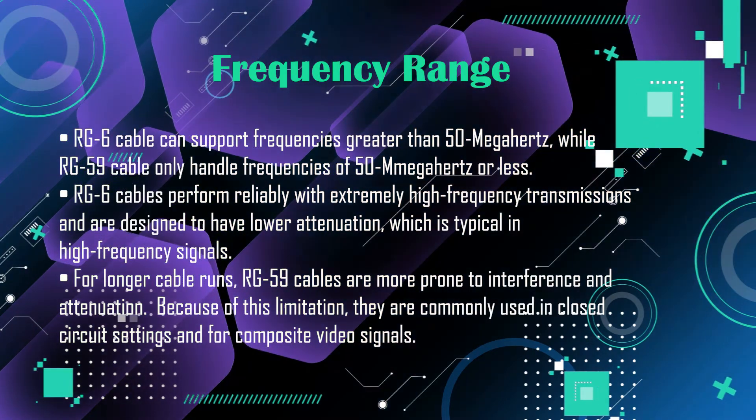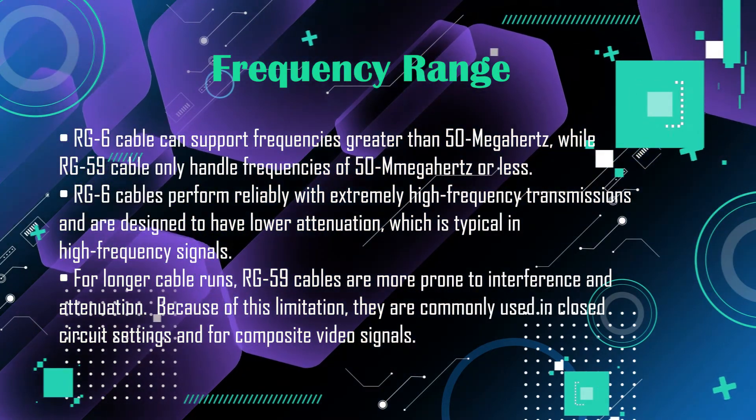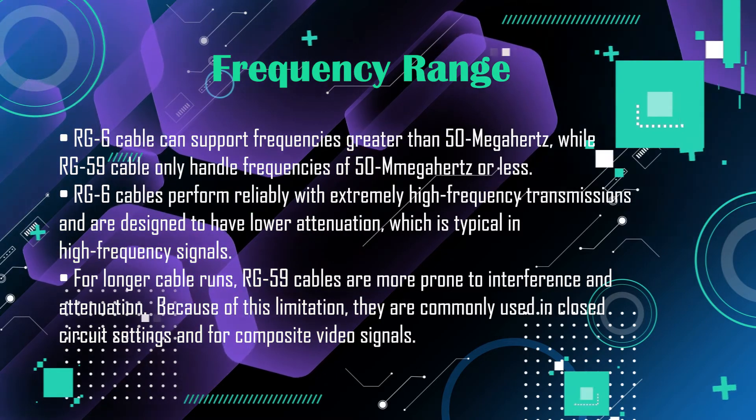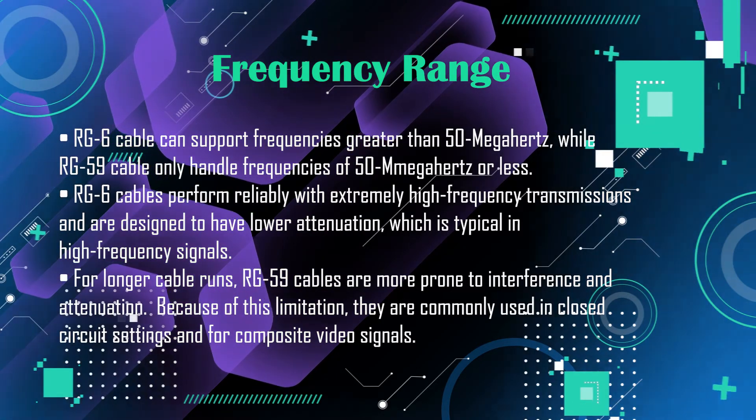RG59 cables are more prone to interference and attenuation. Because of this limitation, they are commonly used in closed circuit settings and for composite video signals.